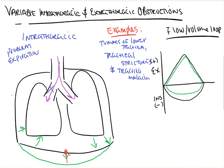Conversely, when they exhale and the diaphragm moves back up, intrapleural pressure increases, squishing down on the lungs and the small airways. As air is trying to move out, the pleural pressure jams down on the area where this lesion is, obstructing outward flow. So patients with intrathoracic lesions have problems with expiration, and their flow volume loop will look normal on inspiration but will be stunted on expiration.